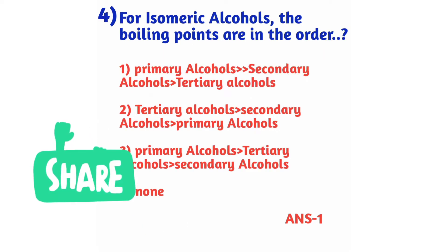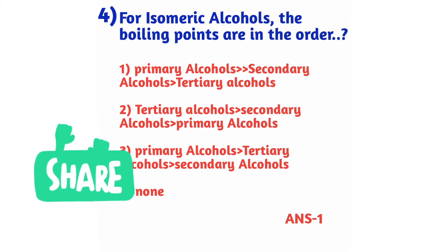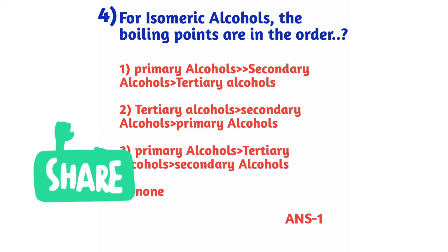Question number 4: For isomeric alcohols, the boiling points are in the order — option 1: primary > secondary > tertiary, option 2: tertiary > secondary > primary, option 3: primary > tertiary > secondary, option 4: none. The correct order is primary alcohols > secondary alcohols > tertiary alcohols.